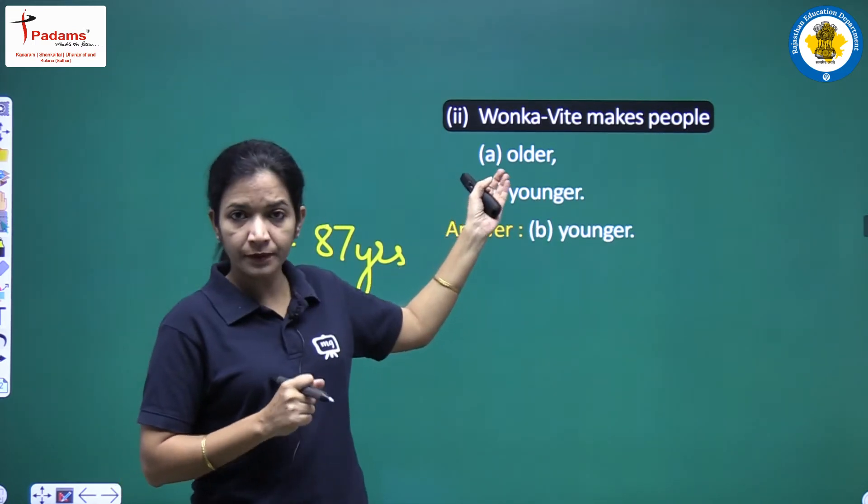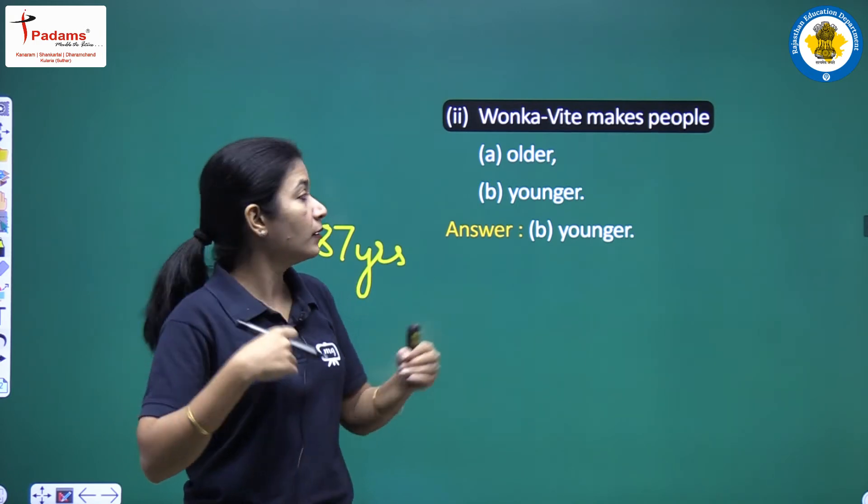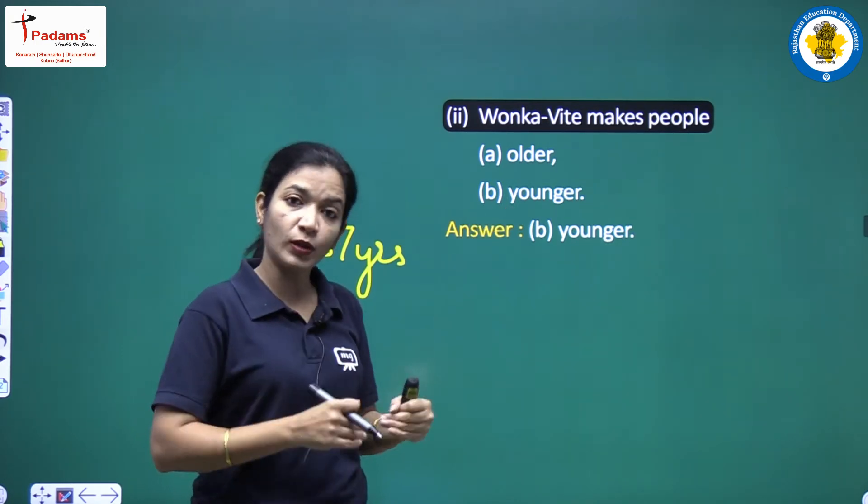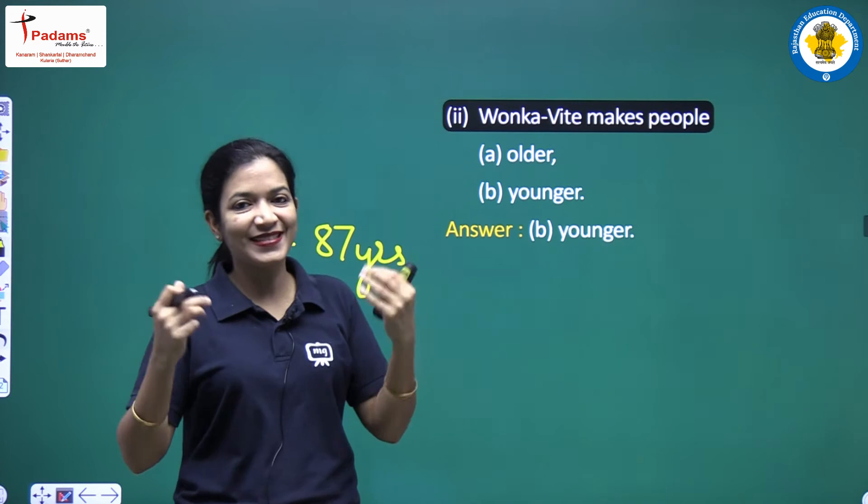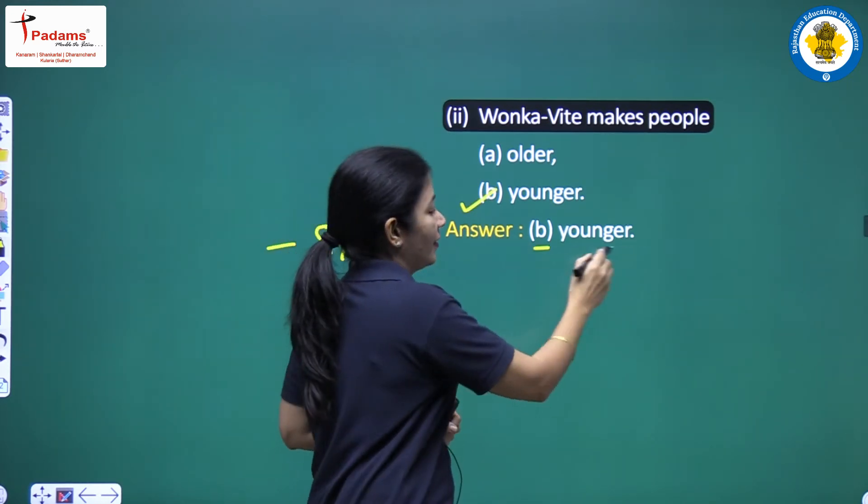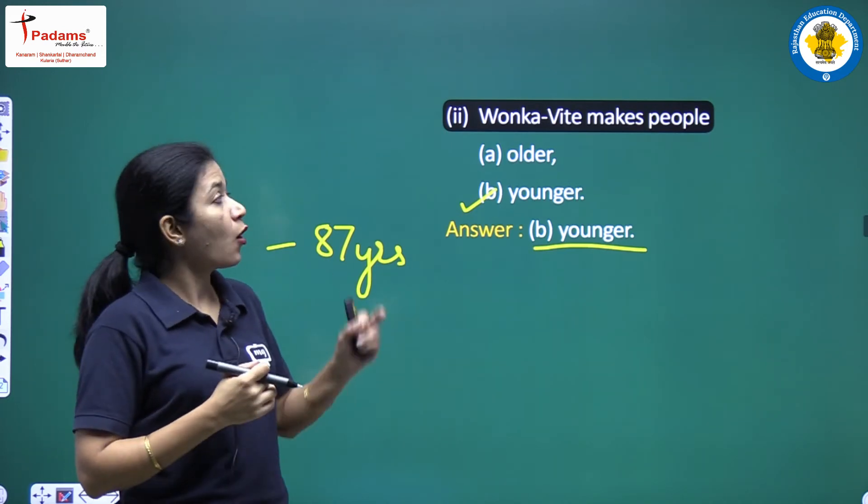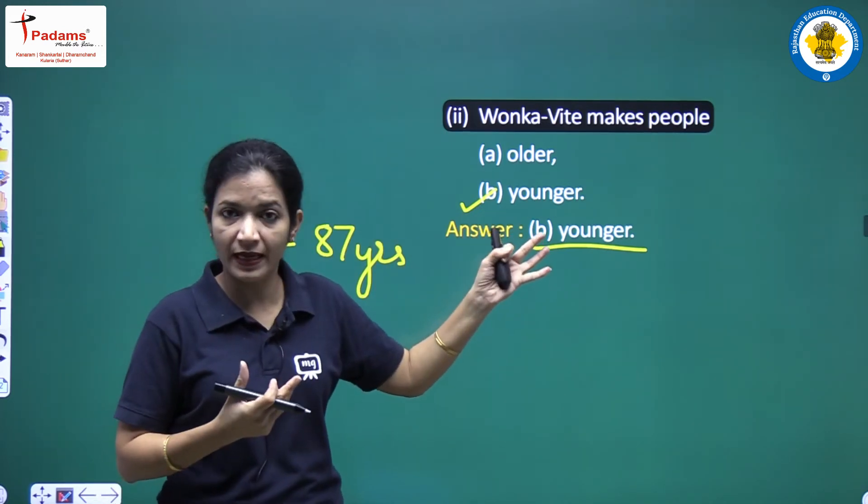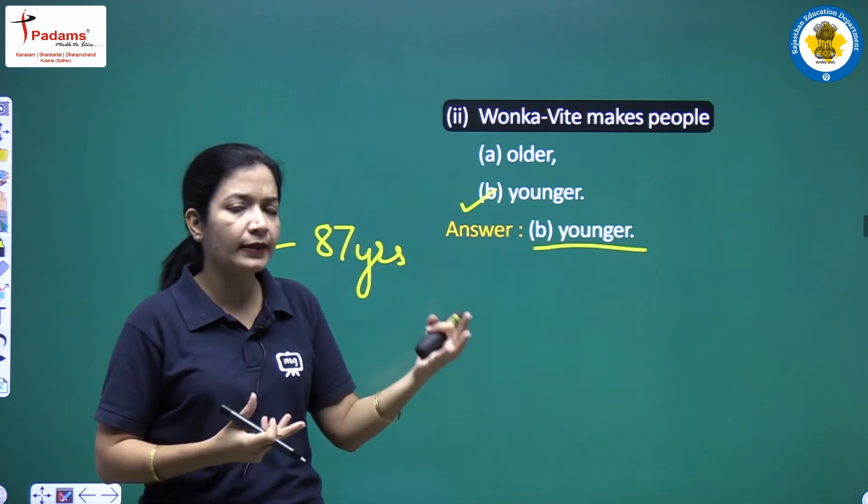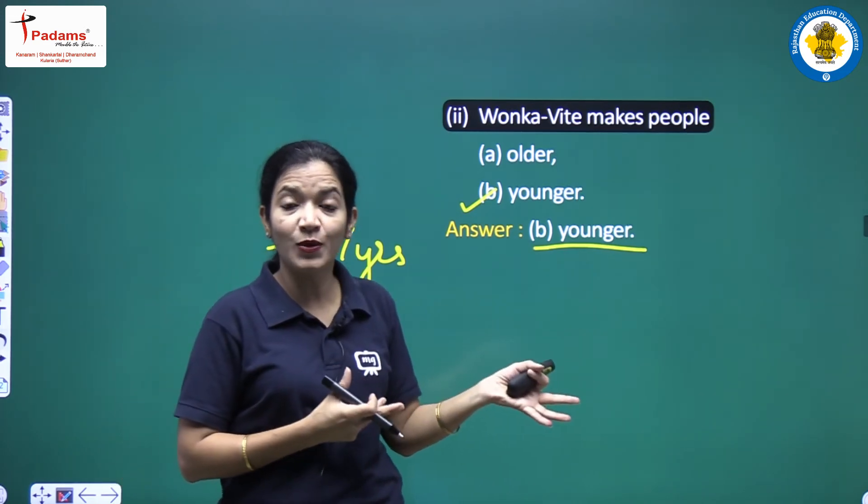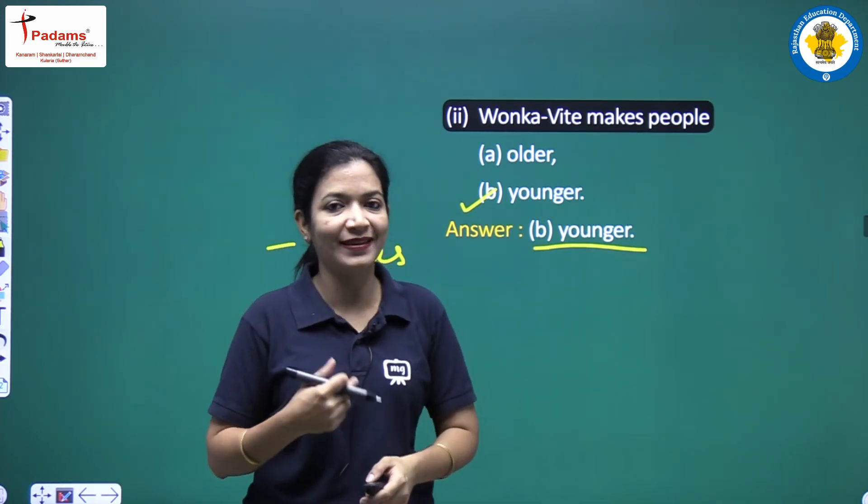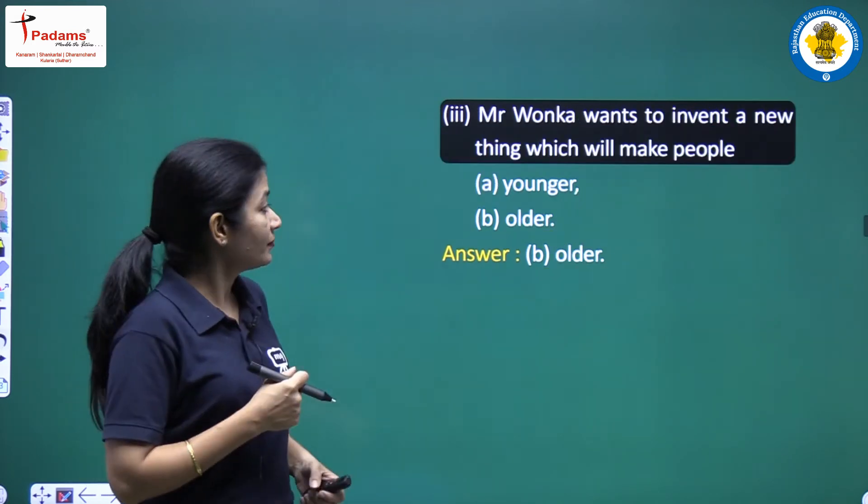Yes, the correct answer is younger. Wonka White decreases age. And Vita-Wonk, which he's going to make, let's see what effect it has - we are going to read in the next part.